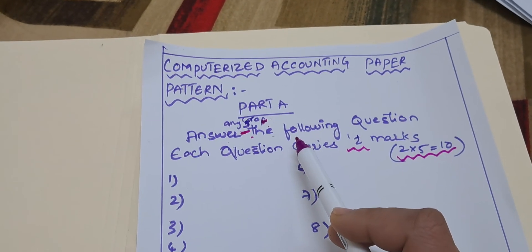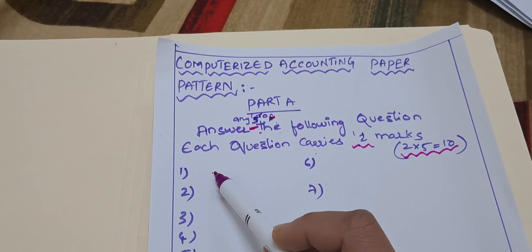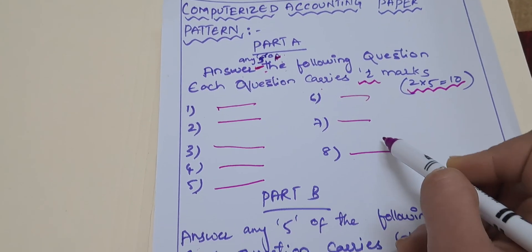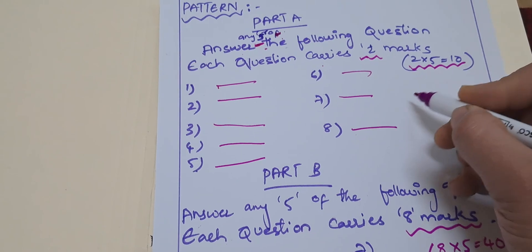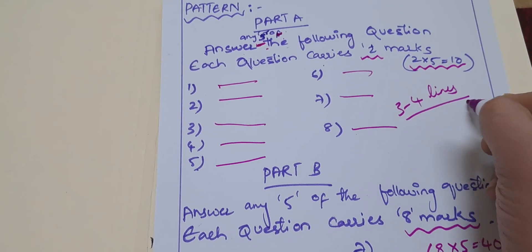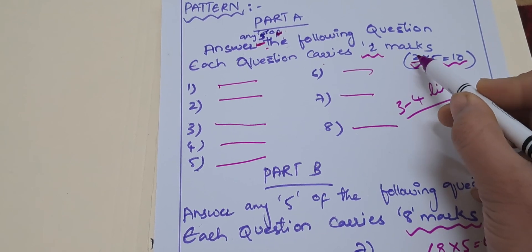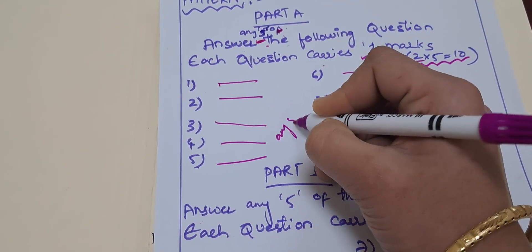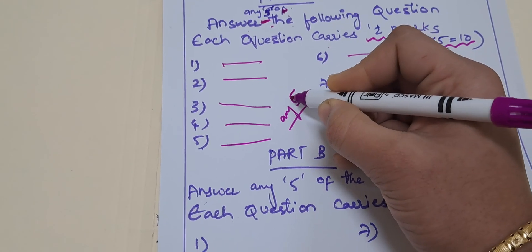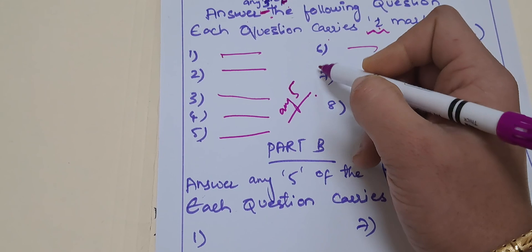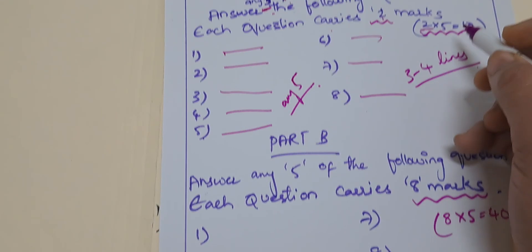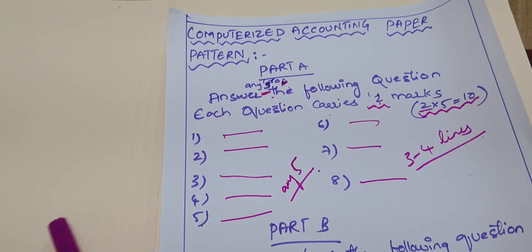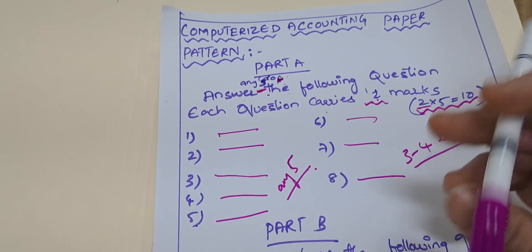You have to answer any five. There will be eight questions given — question numbers one through eight — and you pick any five to answer for two marks each. For two marks, three to four lines is enough. Don't write lengthy answers; three to four lines is sufficient because it only carries two marks.